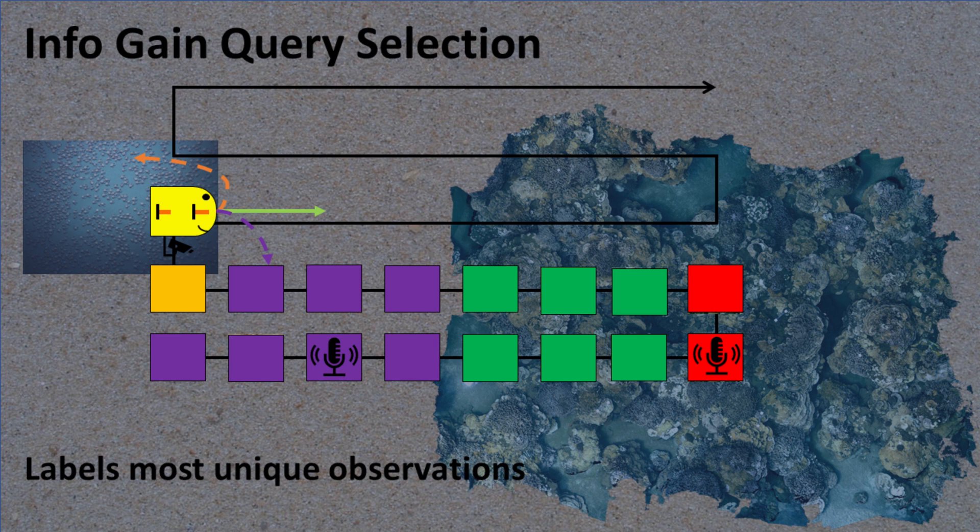most information-theoretic algorithms would be about equally likely to send an image of crabs or the corals, because the robot does not have any labels for either.